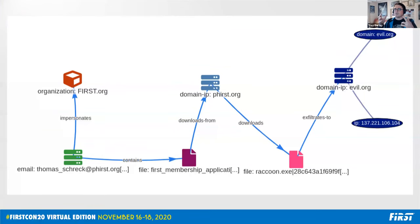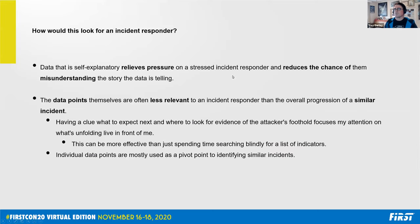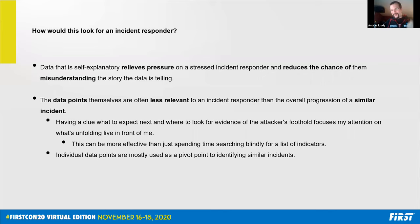Here we see that same data represented as a graph. These are the same data points that started as a flat list of indicators, but by doing a little work to show the relationships between them, I could look at this picture knowing nothing about your environment and tell you the story of what's happening. Let's talk about how this actually affects the different user groups — this takes extra legwork compared to throwing out indicator lists, but let's see how it affects the recipients.